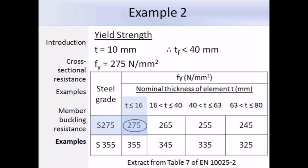In the UK we refer to the product standards. From table 7 of EN 10025-2, the thickness is less than 16 mm and the steel grade is S275. Therefore the yield strength of the section is 275 N/mm².